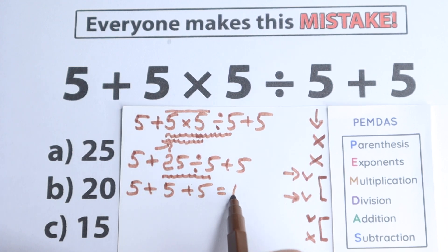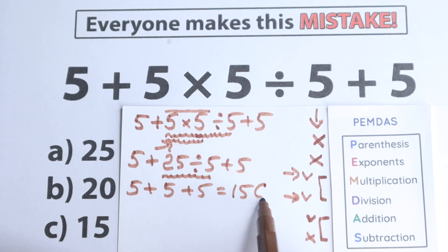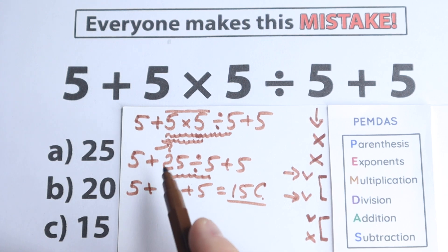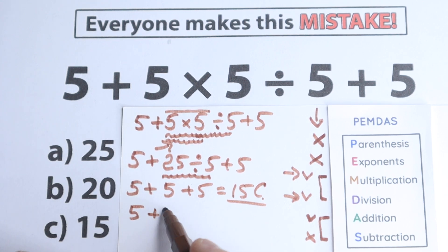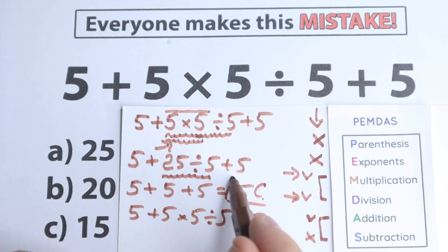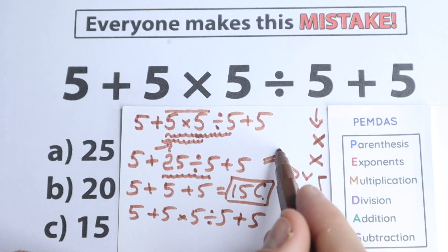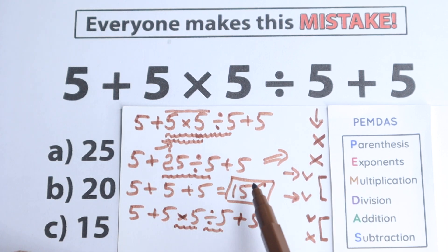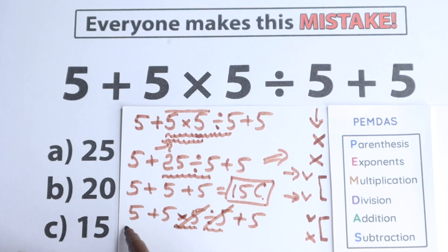So we have 5 plus 5 plus 5, which equals 15. Option C is absolutely the correct answer. But here is the main trick: if we read this question — 5 plus 5 times 5 divided by 5 plus 5 — according to PEMDAS the correct answer is 15. But if you know a little bit about math tricks, take a look closely: right here we have multiplication by 5 and then division by 5. Multiplying by 5 and dividing by 5 changes nothing — they cancel each other out, and we're left with 5 plus 5 plus 5. This is the algebra trick.